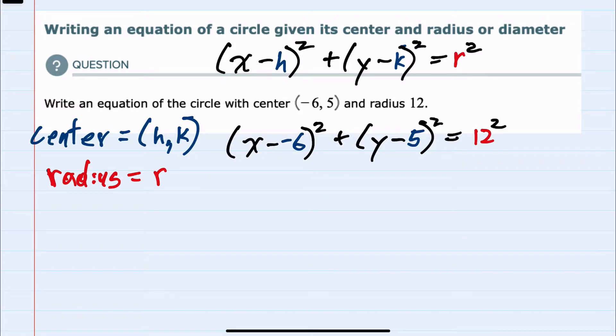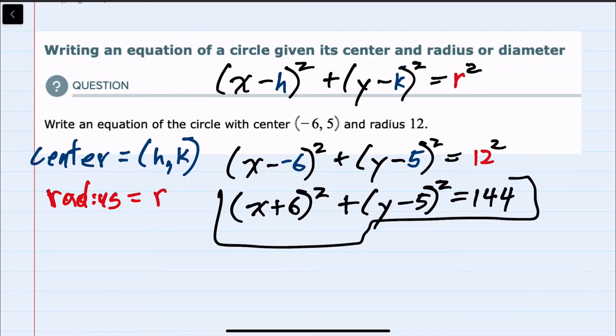We can now simplify on both sides. First, x minus a negative 6 is (x + 6)², the (y - 5)² stays the same, and then on the right hand side 12 squared is 144. So we have found the equation of the circle.